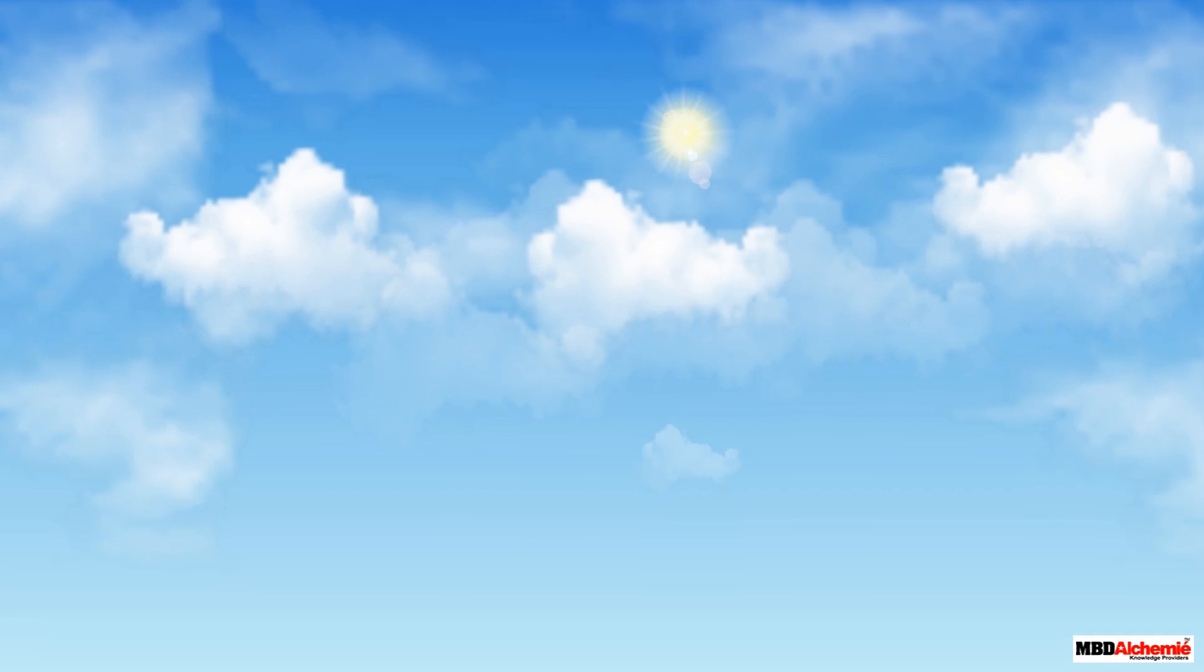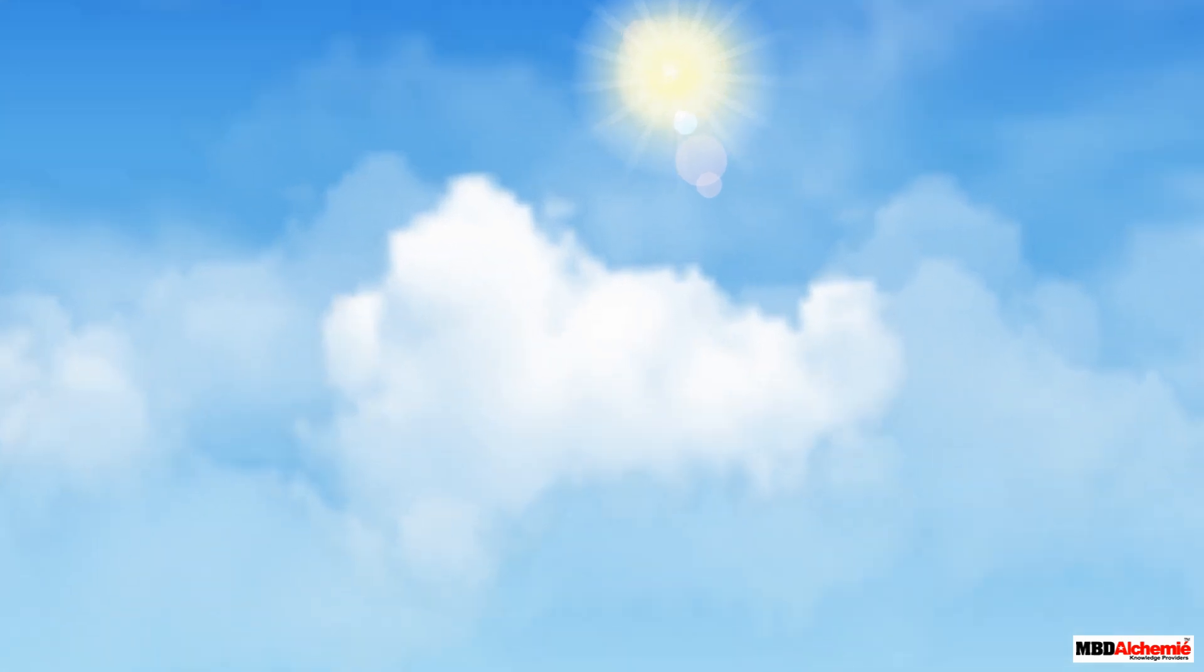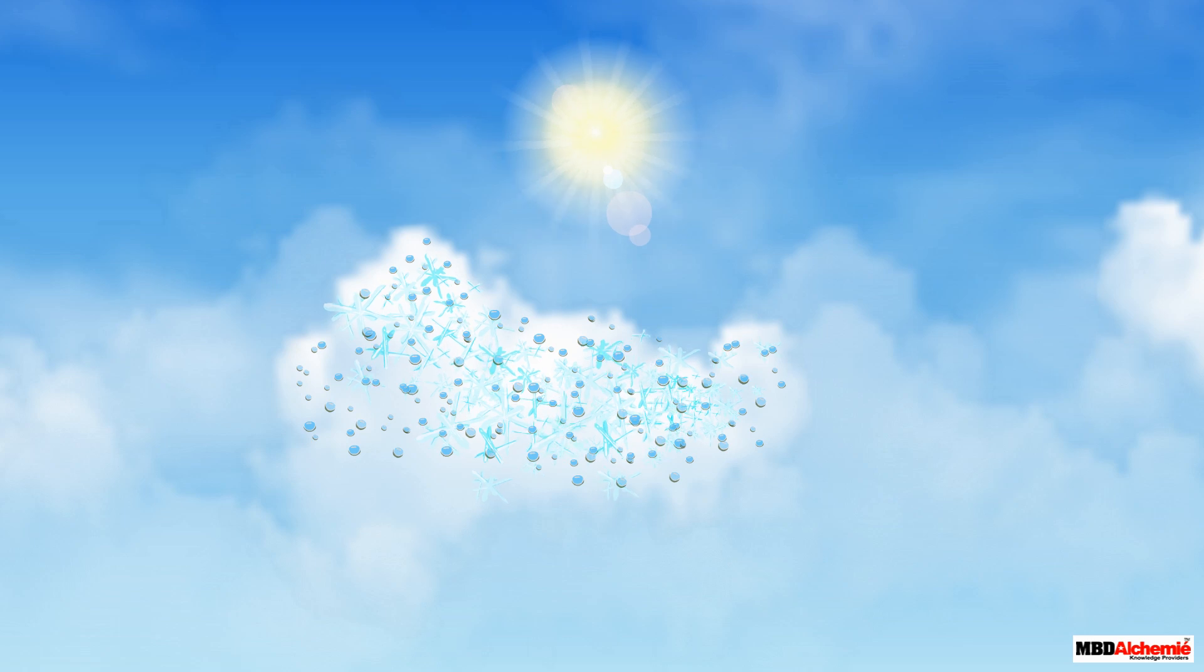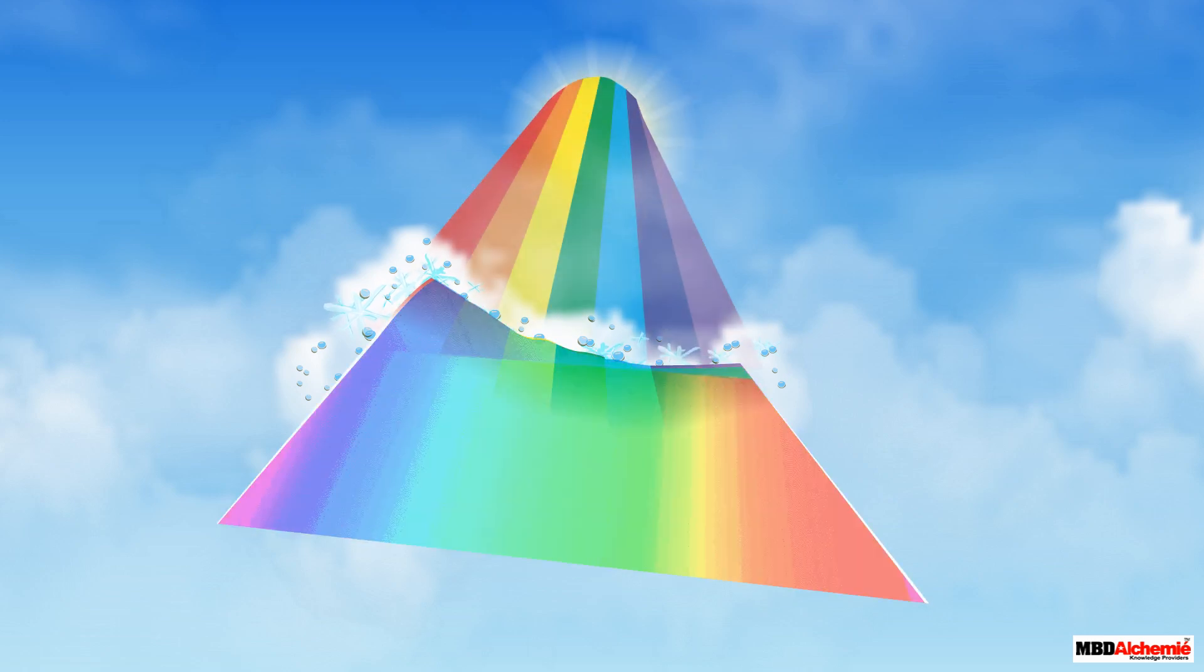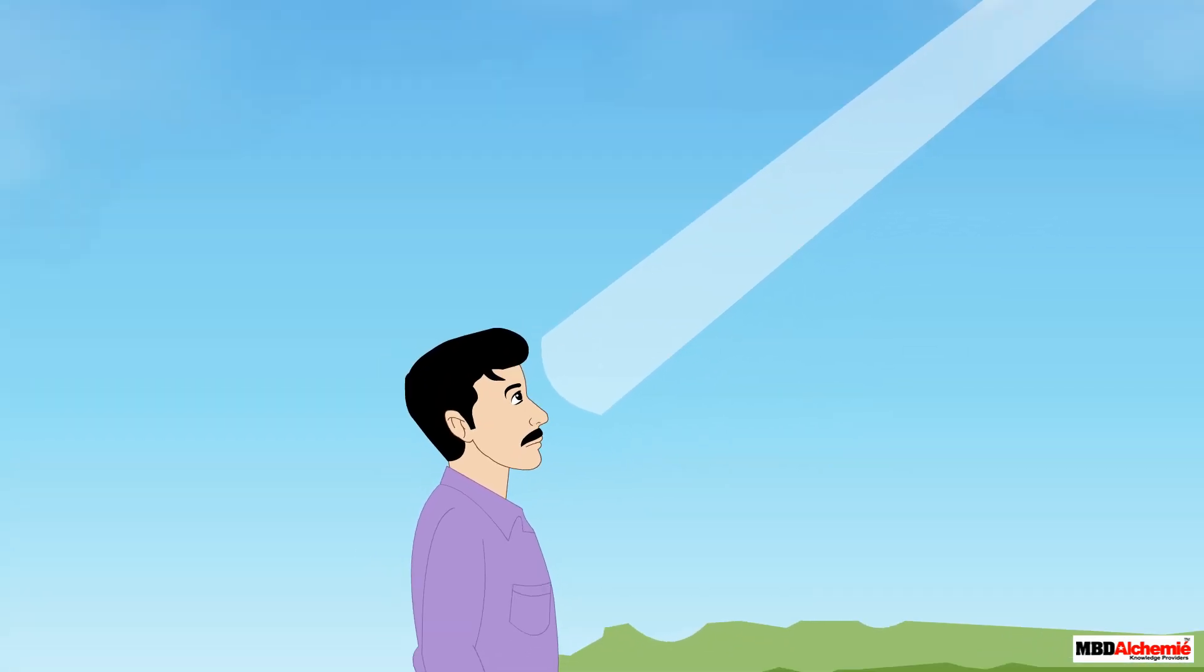Let us now understand how it makes the clouds appear white. The clouds consist of large water and ice particles. These large particles scatter all the seven constituent colors of white light, VIBGYOR, equally. Thus, the light we see is the combination of all colors, that is, white light. This gives a white appearance to the clouds.